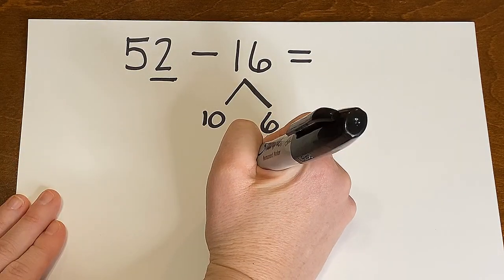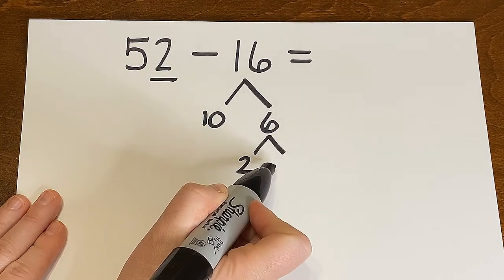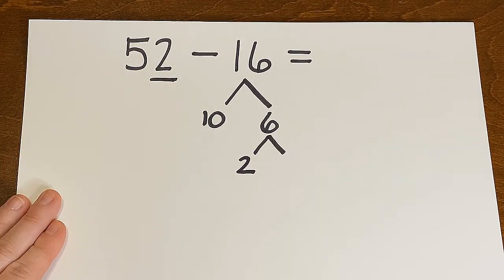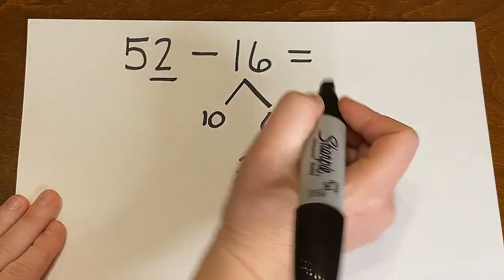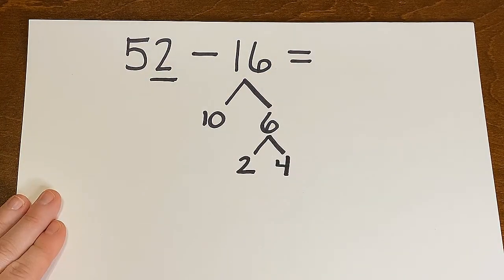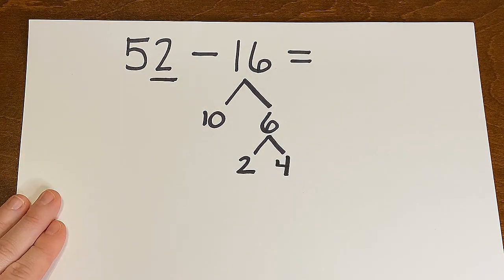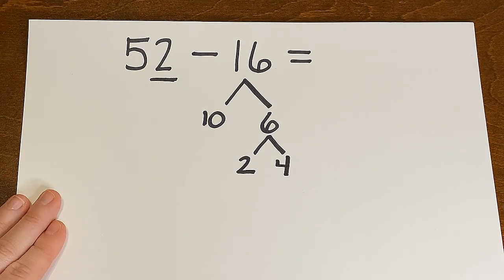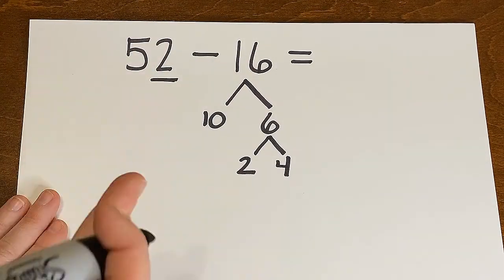Now I need to think to myself 2 plus what number is going to give me 6? Or 6 take away 2 gives me a number. And if I know my facts I know that number is 4. And again you might be thinking oh my gosh Mrs. Olmsted that's simply a fact family. And you are correct. Now I have all these numbers here and I've broken this apart. What does this mean?